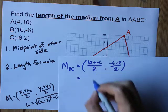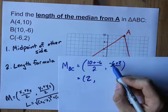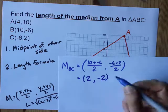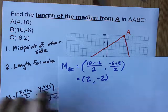What do we get here? We get 4 over 2, that's 2. This is negative 4 over 2, it's negative 2. So I get a midpoint at 2 comma negative 2.